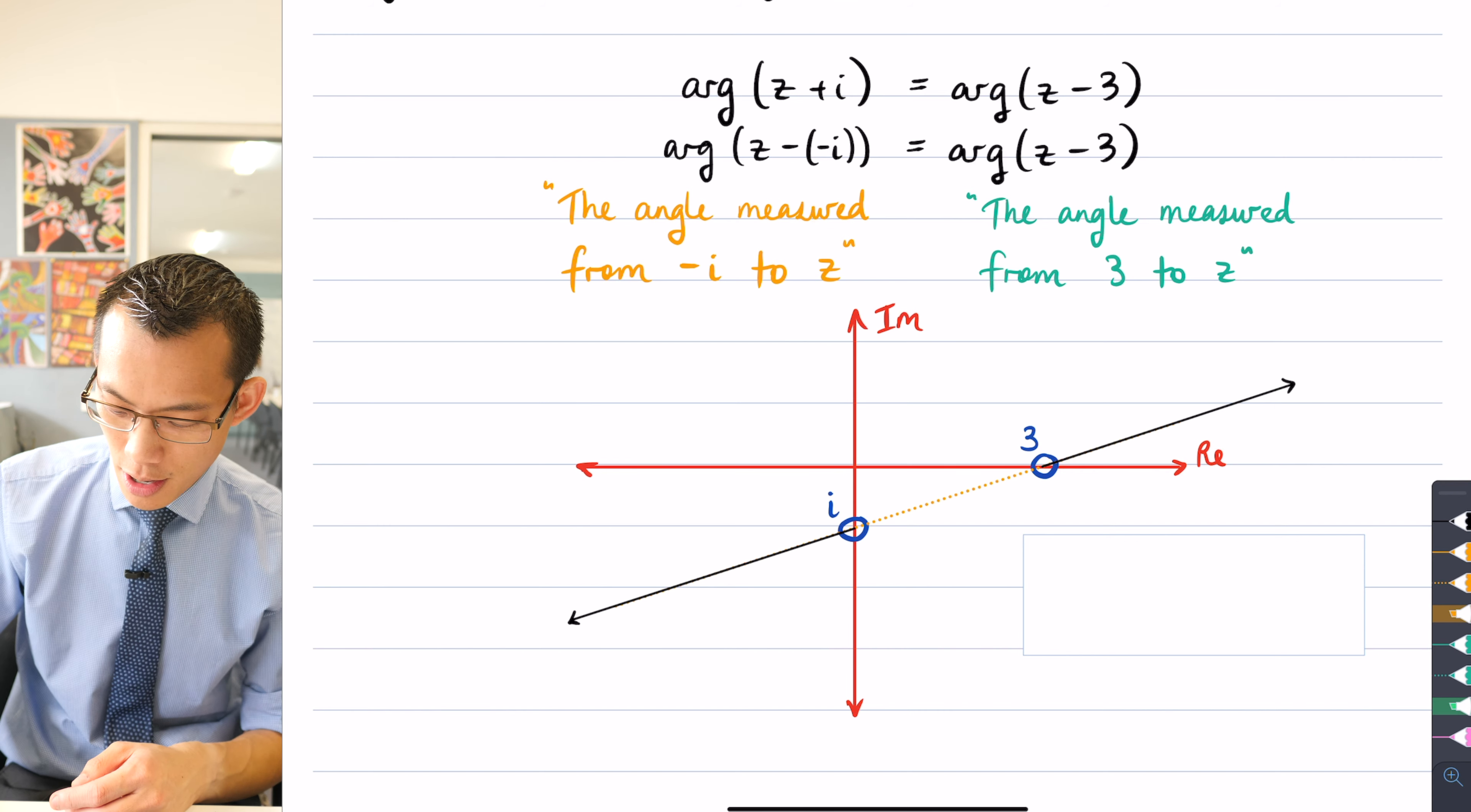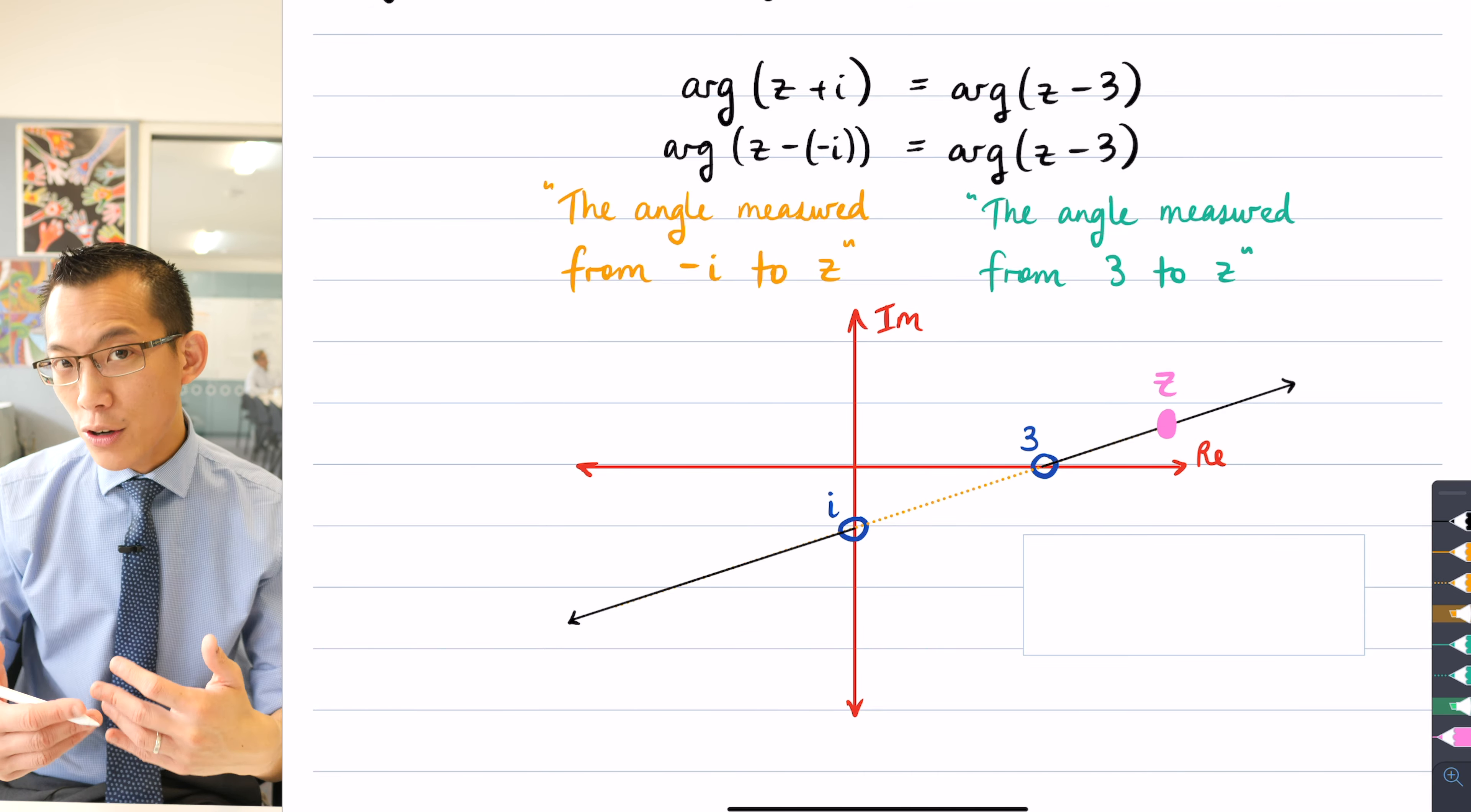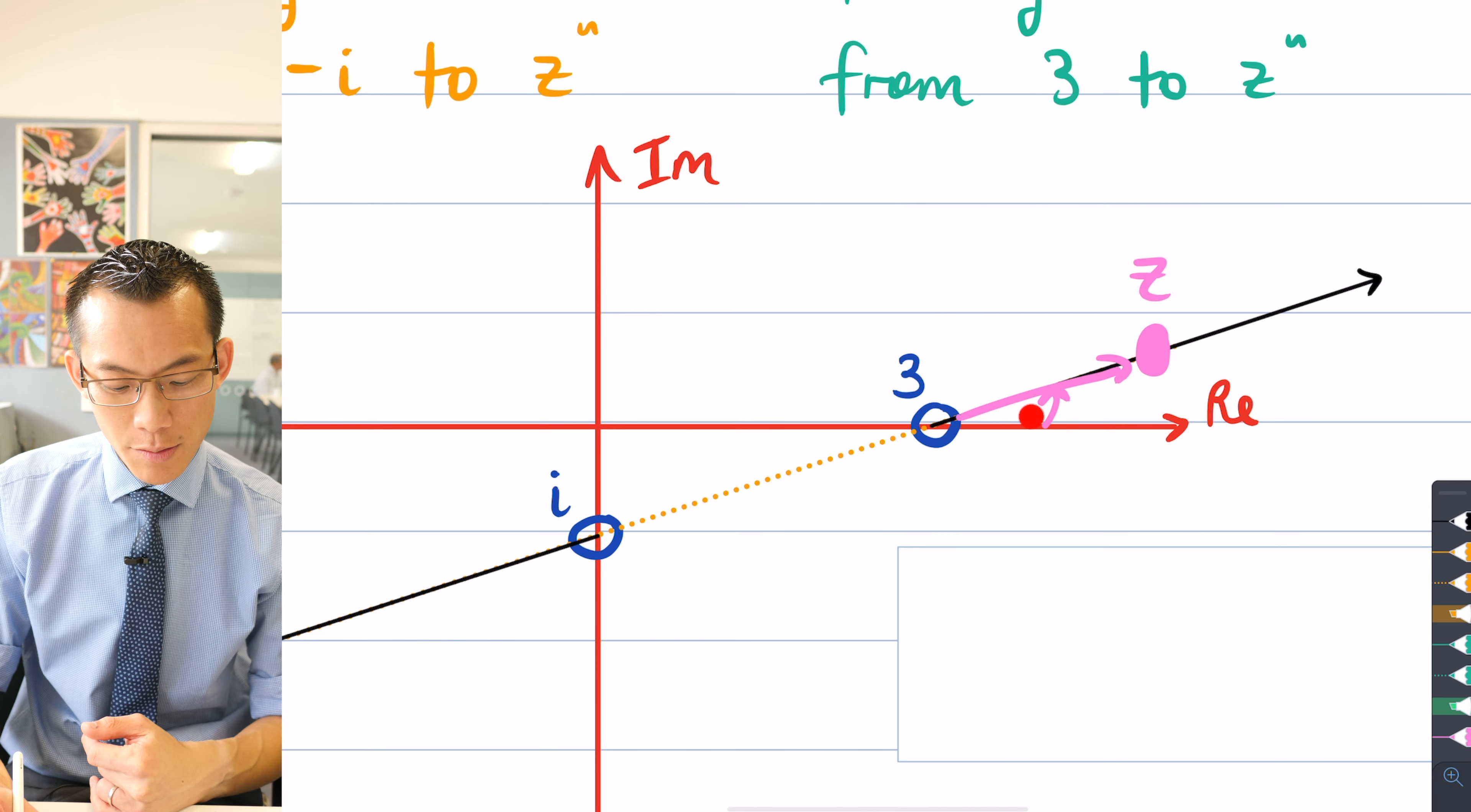If you just have a think for example about let's pick a point over here, I'm saying that could be a potential value for z. When you think about the angle measured to that point from say 3, it's going to be this angle here from the positive real axis upwards.